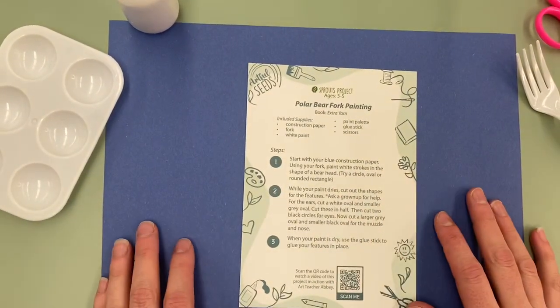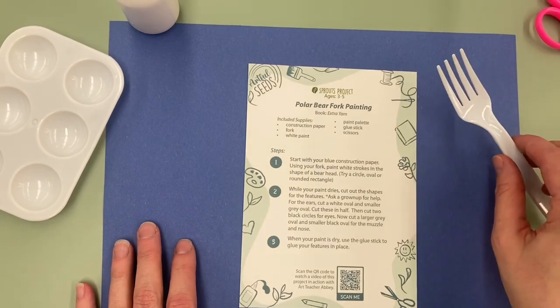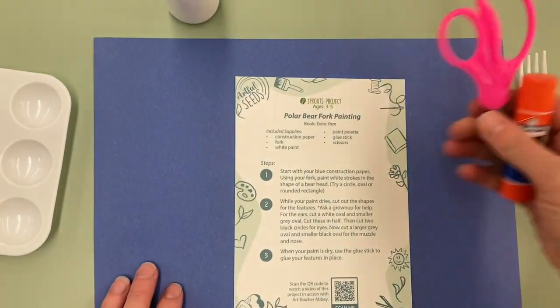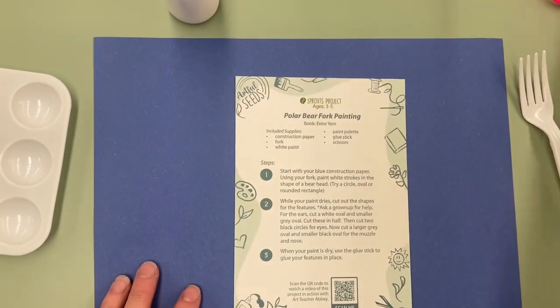We're gonna need construction paper, a fork, our paint palette and white paint, and then we will eventually need glue stick and scissors. Let's get started.